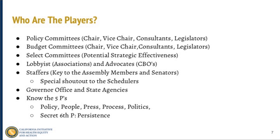One of the most important things to know when walking around the Capitol or advocating — with any subject area, anywhere — is the five P's: policy, people, press, and politics, with persistence as the sixth P. The most important P is the people; you really can't get anything done without them. You can have a sound policy, but it can run into political barriers. These are barriers that, with persistence, you can overcome.